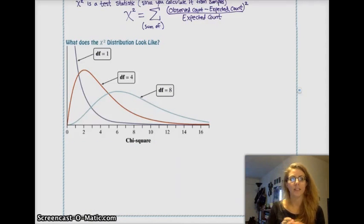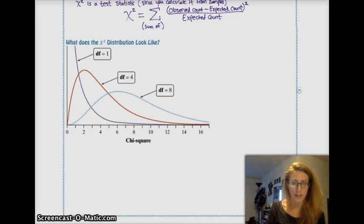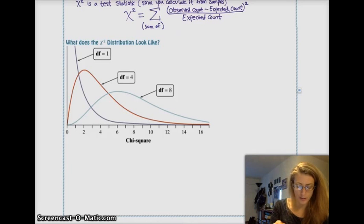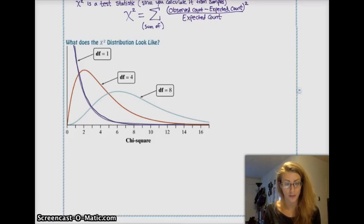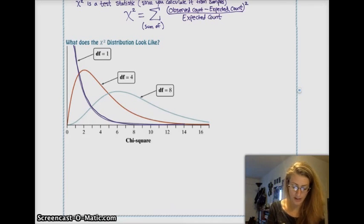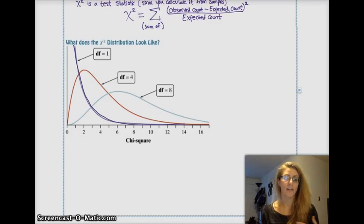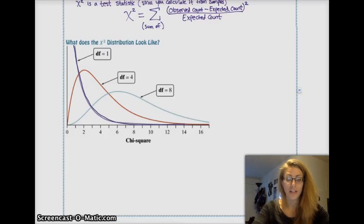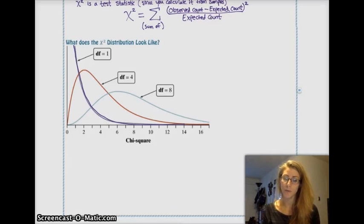For every different number of degrees of freedom, the chi-squared distribution looks different. With degrees of freedom of 1, it looks like a very, very skewed right curve. Degrees of freedom 4 is also skewed right, but less so. Degrees of freedom 8 is still skewed right, but even less so.